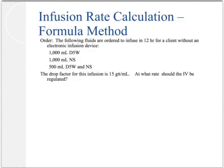Formula method first. In this example, the prescriber has ordered the following fluids to infuse in 12 hours for a client without an electronic infusion device: 1,000 milliliters of D5W (5% dextrose in water), 1,000 milliliters of NS (normal saline), and 500 milliliters of a solution containing both D5W and NS. Since all fluids must infuse within 12 hours, we calculate the infusion rate for the total volume: 1,000 + 1,000 + 500 = 2,500 milliliters of fluid.